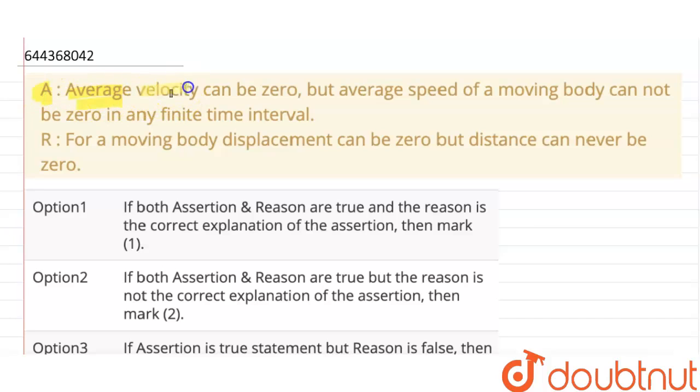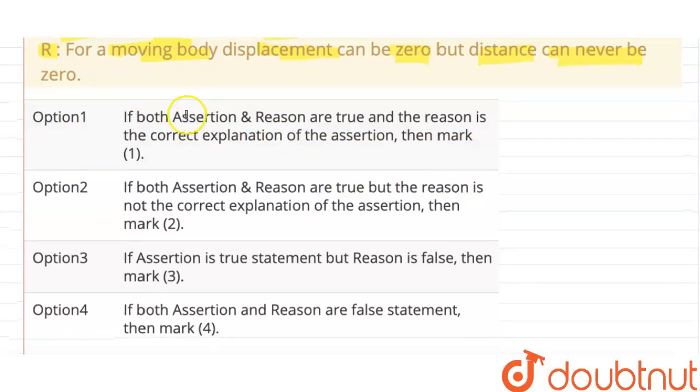Assertion: Average velocity can be zero, but average speed of a moving body cannot be zero in any finite time interval. Reason: For a moving body, displacement can be zero but distance can never be zero.